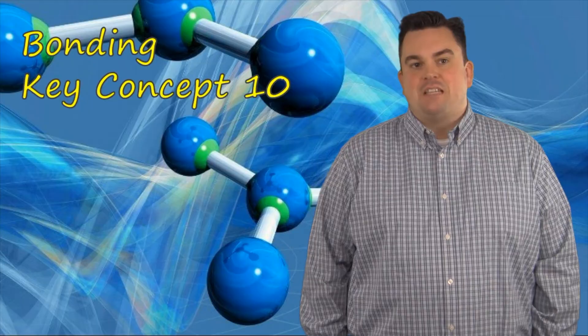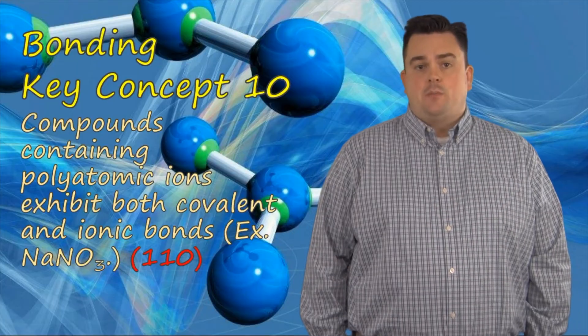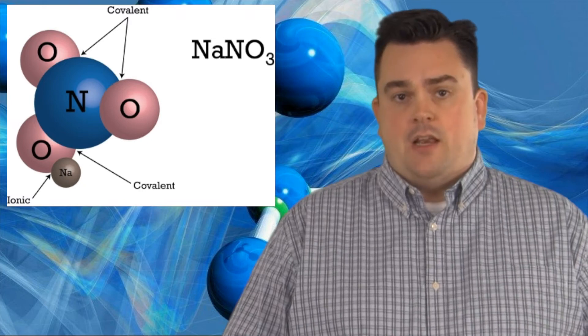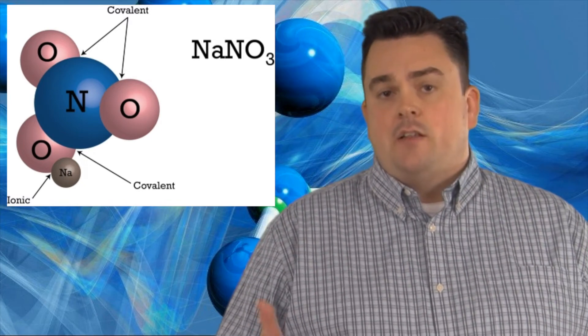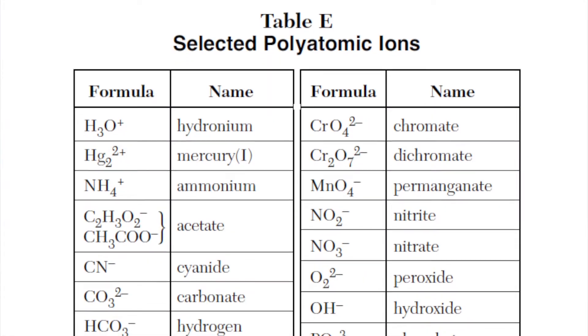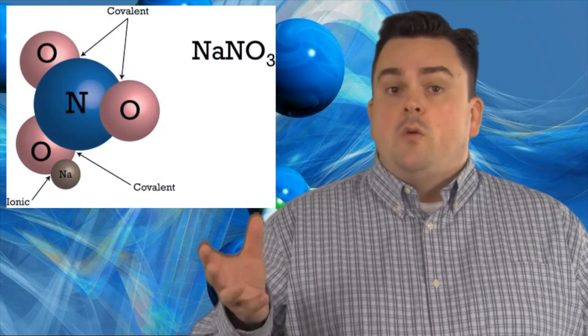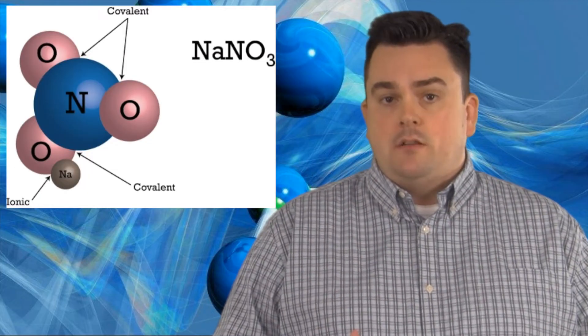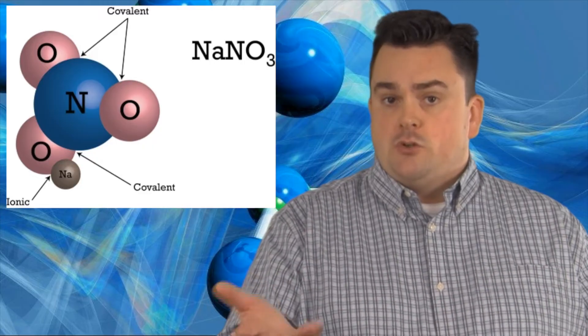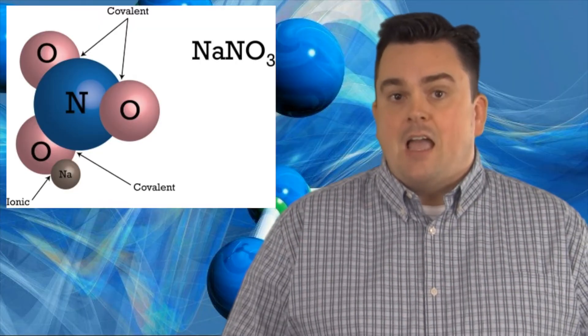Bonding key concept ten. Compounds containing polyatomic ions exhibit both covalent and ionic bonds. For example, NaNO3. In this example of NaNO3, I have the polyatomic ion nitrate. I know I have nitrate because I cross-reference it with table E, your selected polyatomic ions. Don't forget about table E. With sodium nitrate, sodium is my metal here. Sodium has lost an electron to become an ion, and nitrate, as you saw on table E, has a negative charge. So the sodium to the nitrate is my ionic bond.